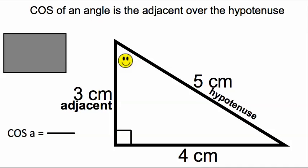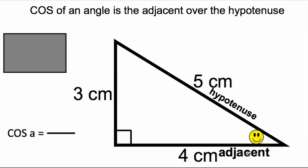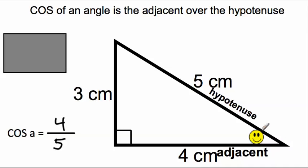Now, what if the angle that we actually want to find is this angle right over here? The 3 centimeter length is not the adjacent one anymore — the adjacent side is now the 4 centimeter length. The hypotenuse is still the hypotenuse; nothing changed there. So we're going to write 5 for the hypotenuse, but now our adjacent is 4. So the cosine of that angle is going to be 4 over 5.